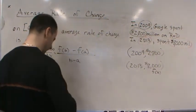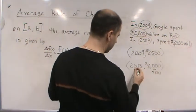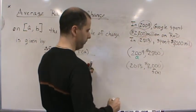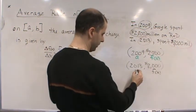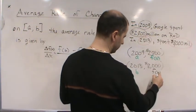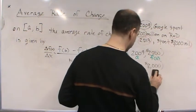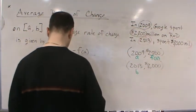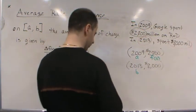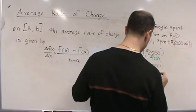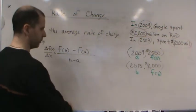This is going to be our a and b. So let's define: 2009 is a and 2800 is f(a); 2013 is b and 8000 is f(b). Now I'm going to take these numbers and plug them in.